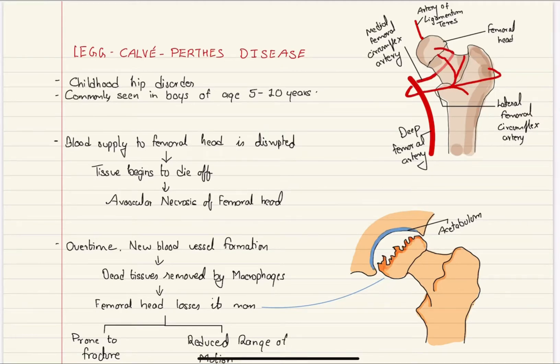In this video, we're going to learn about Legg-Calvé-Perthes disease, or simply Perthes disease. It is a childhood hip disorder commonly seen in boys aged 5 to 10 years. In Perthes disease, the blood supply to the head of the femur is disrupted.